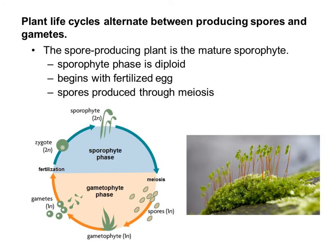The spore-producing plant is the mature sporophyte. The sporophyte phase is diploid, and it begins with a fertilized egg. The best approach when looking at this diagram is to always find where fertilization occurs, and then work your way from there.